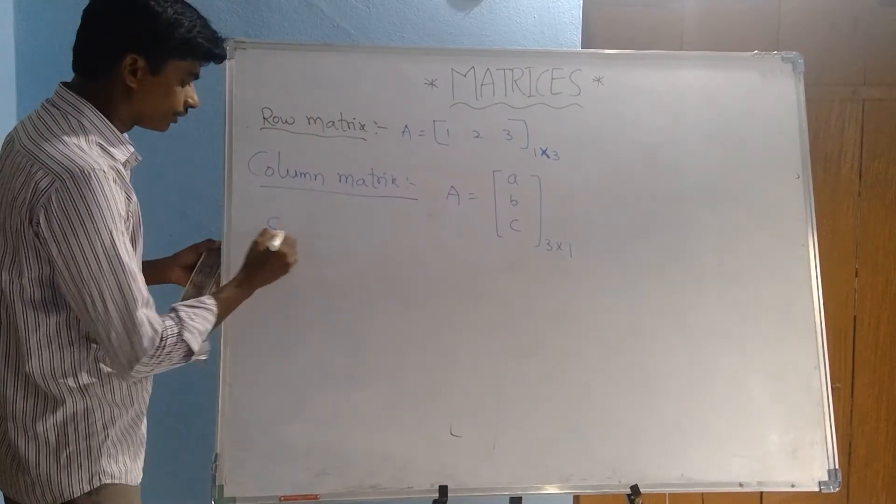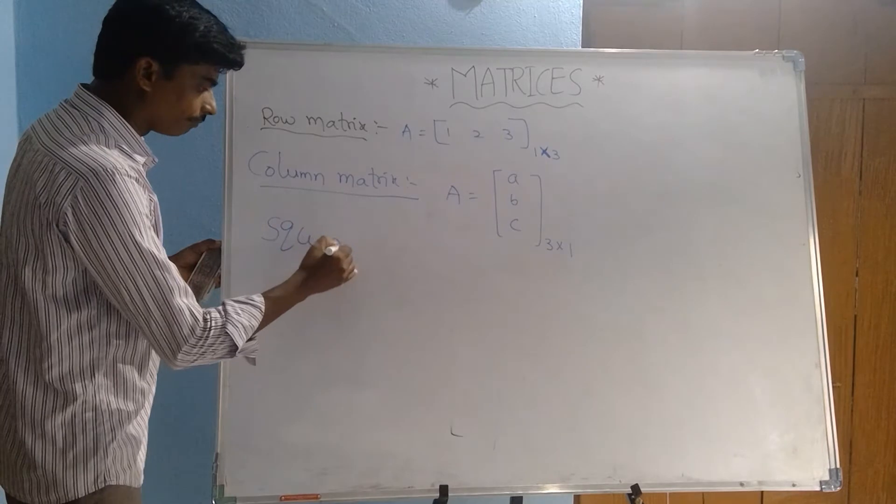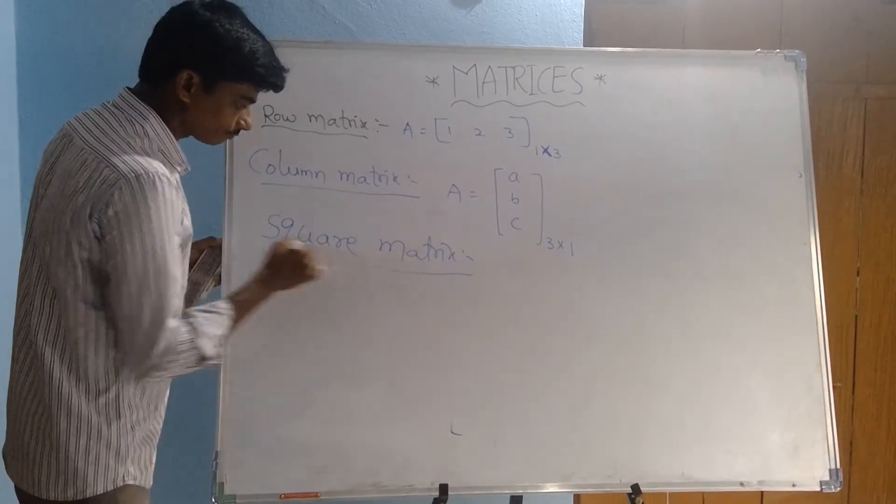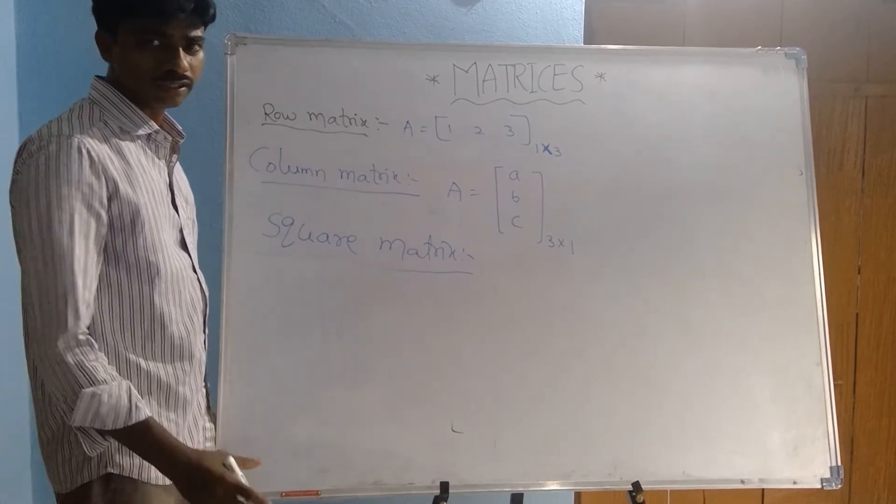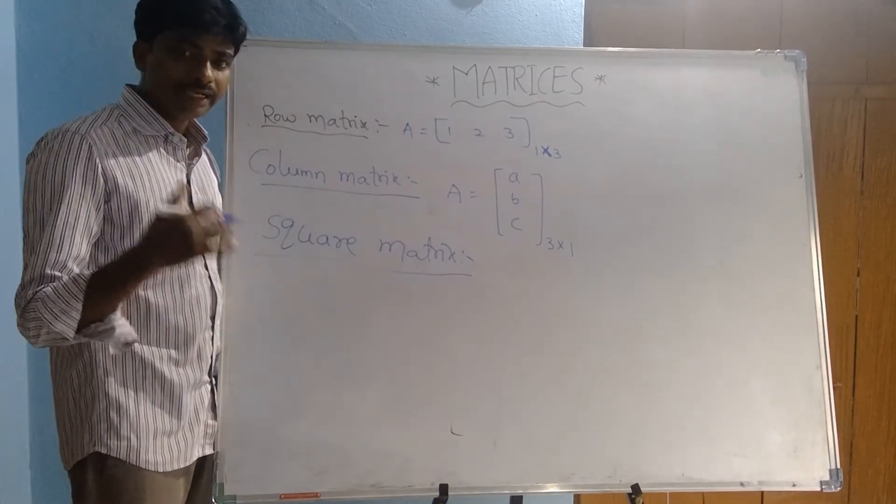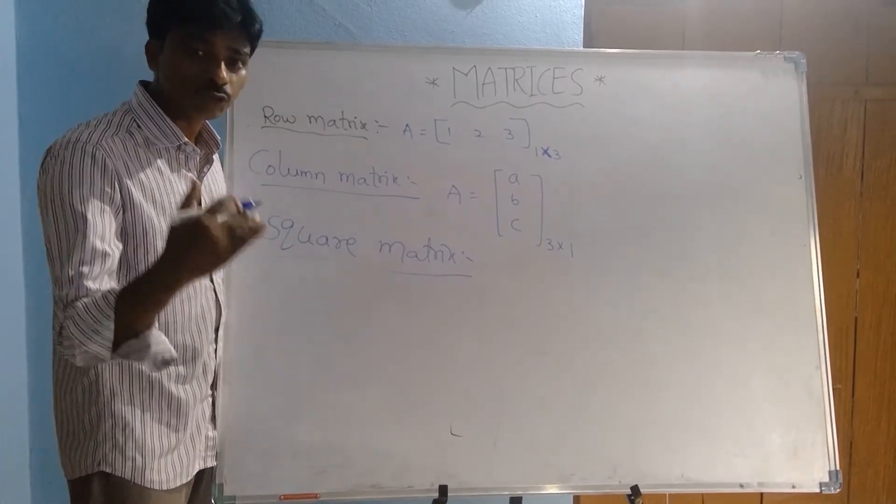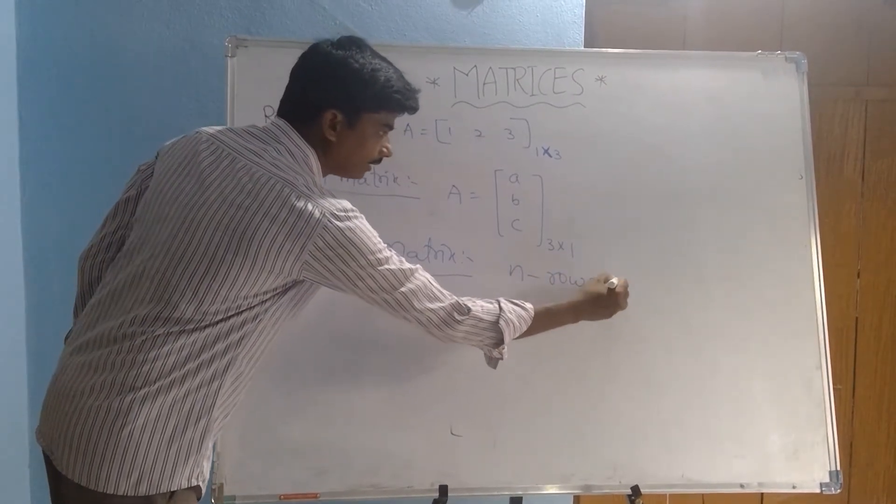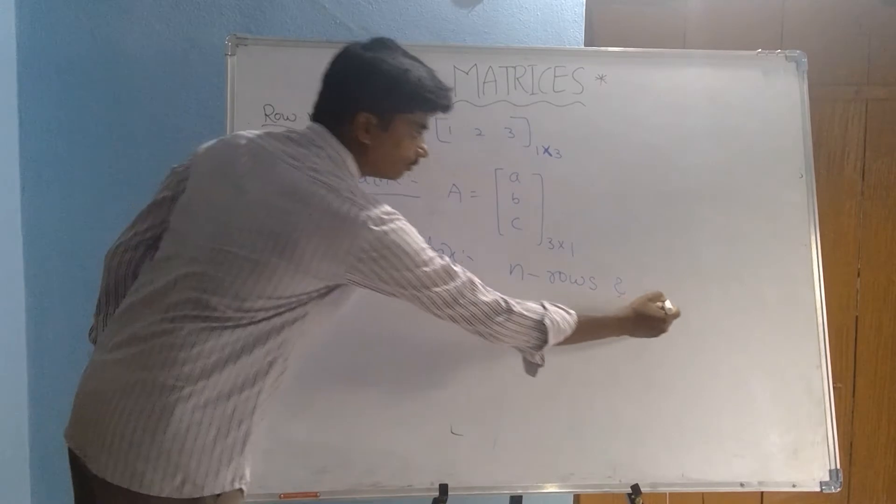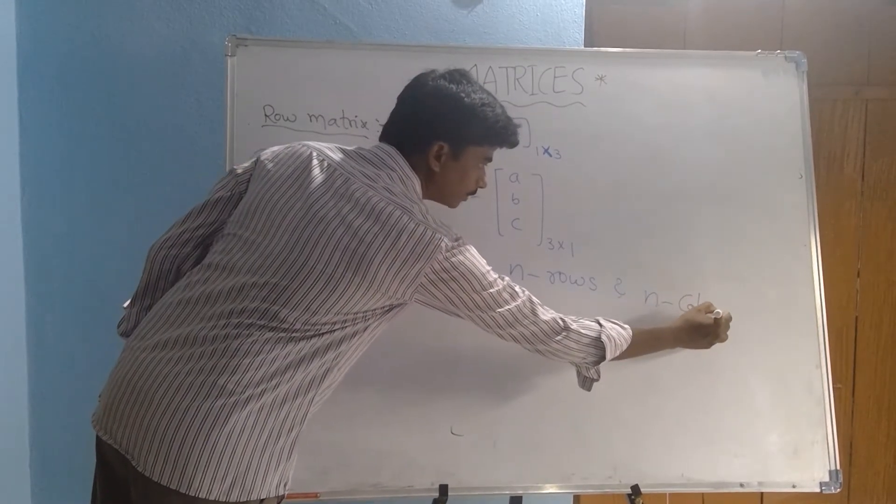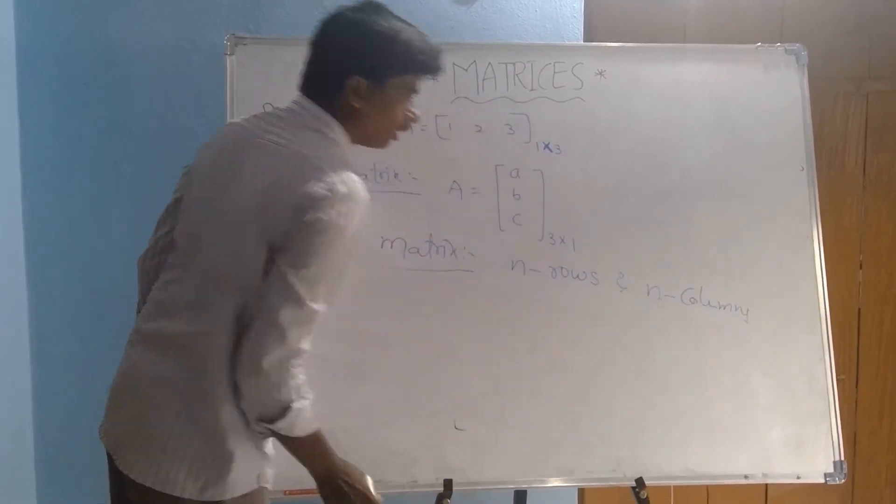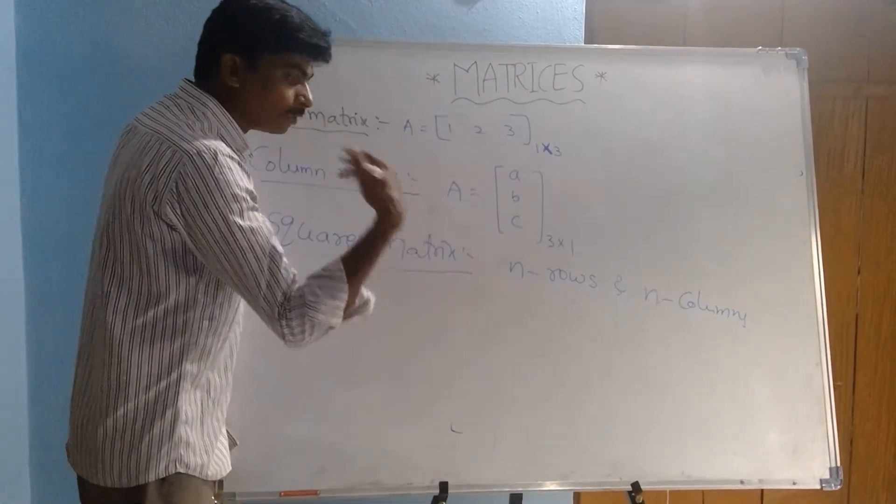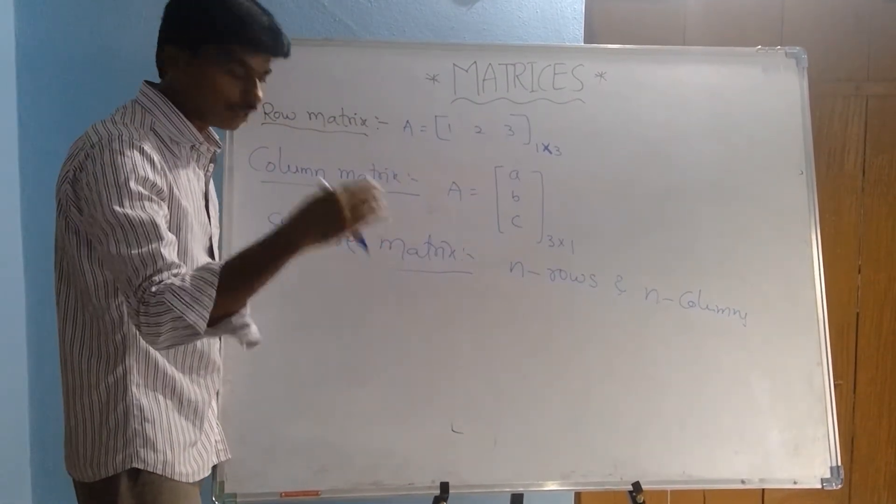Next definition: square matrix. This is also simple definition. A matrix having N rows and N columns is called as square matrix. That means rows and columns are both equal.